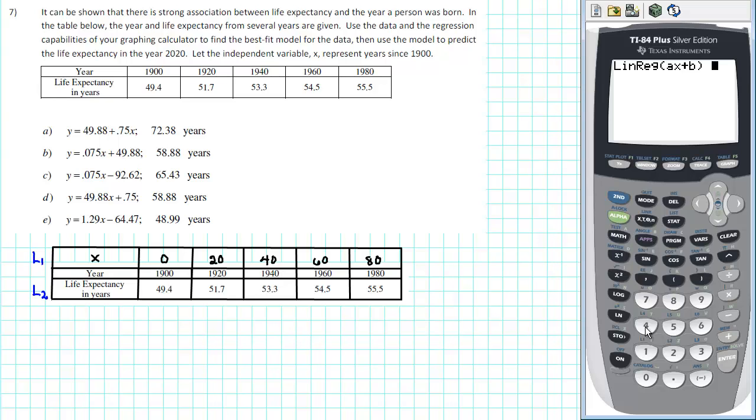The first thing we need to do is to let the calculator know where we entered our input. We entered the input into L1. So we enter 2nd, number 1, which is L1. And then comma, we need to let the calculator know where we stored our output. We stored it in L2. So we press 2nd, number 2, which is L2, and then comma.